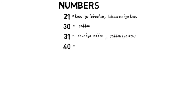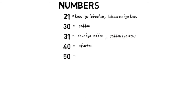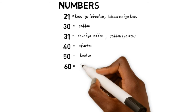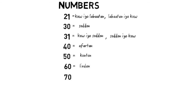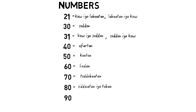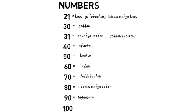Now you get the trend — or the flow, or the music. 40 is 'Akhortan.' 50 is 'Kontan.' 60 is 'Likhidan.' 70 is 'Tadawatan.' 80 is 'Sidetan.' 90 is 'Sagashan.' 100 is 'Bakol.'